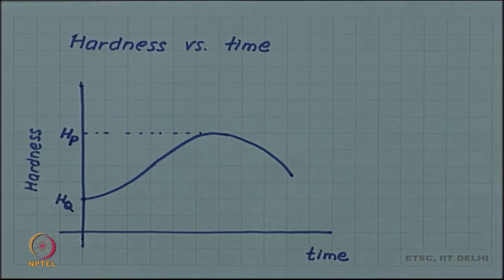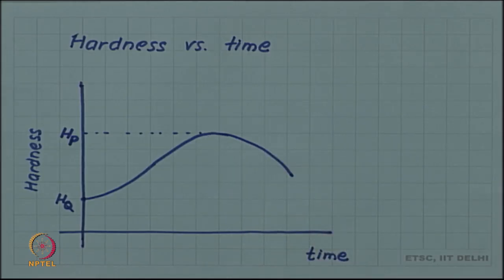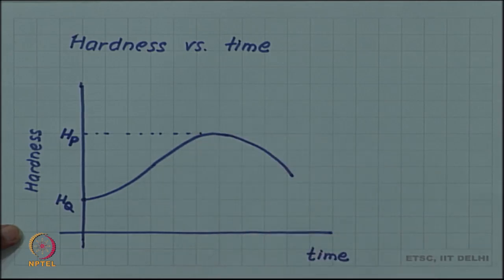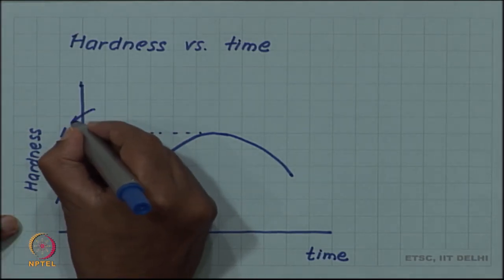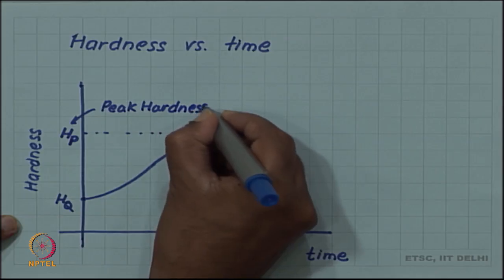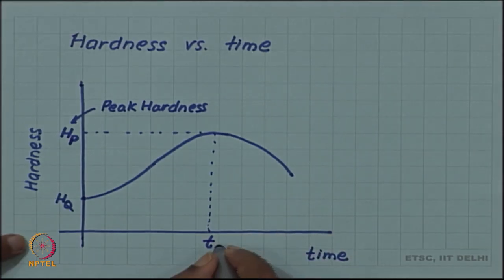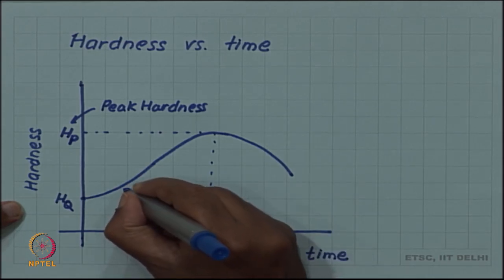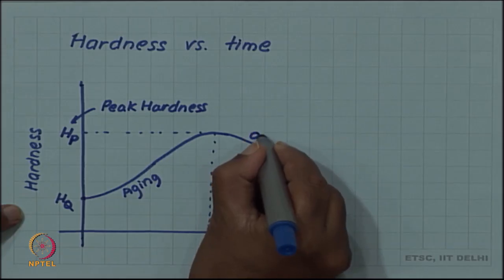In fact, there are two surprises: why the hardness increases as a function of time and then why it is subsequently it starts decreasing. This point is called peak. Hp is the peak hardness and the time corresponding to the peak hardness, let us call that tp. This part of the curve is called aging and beyond peak we call it over aging.